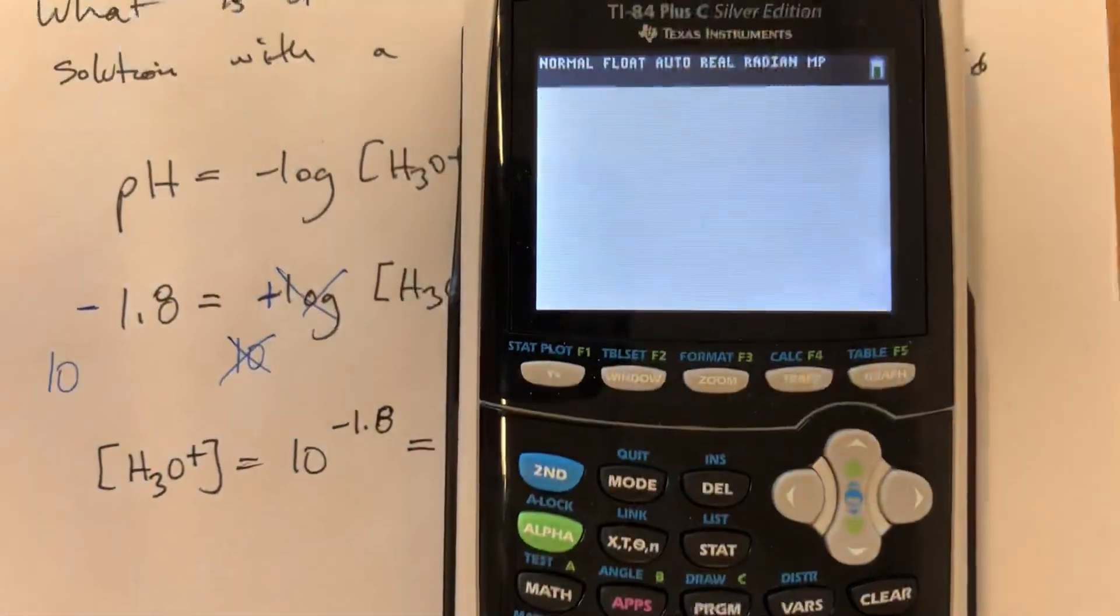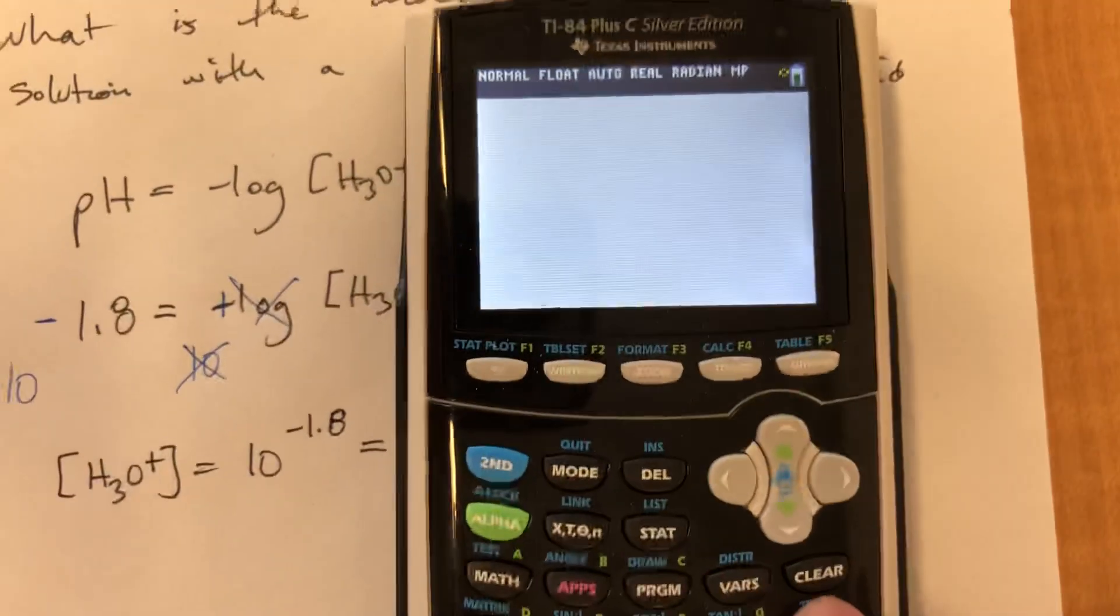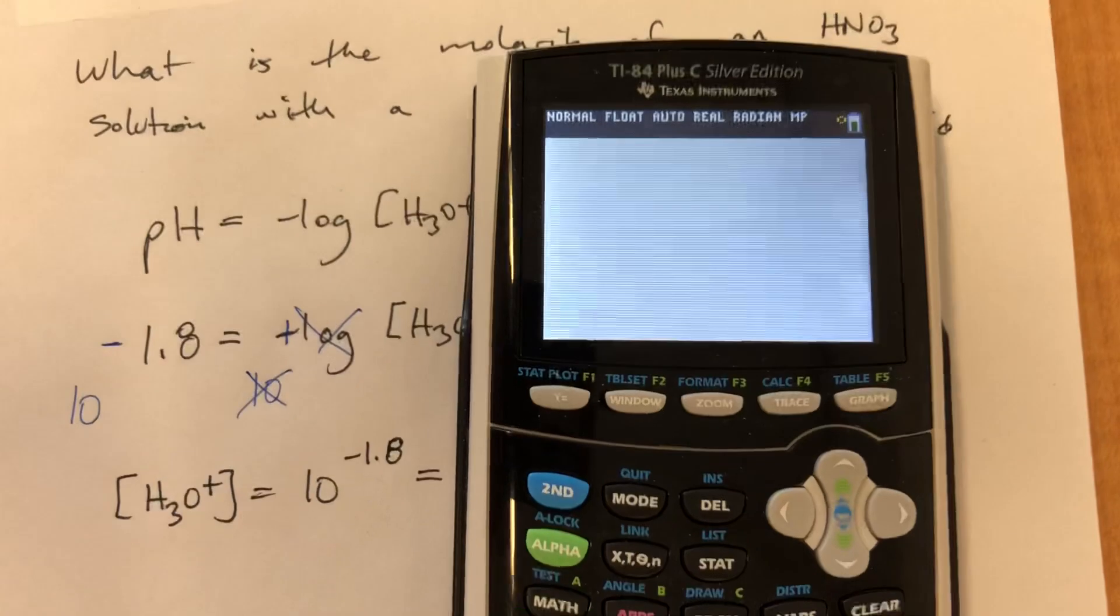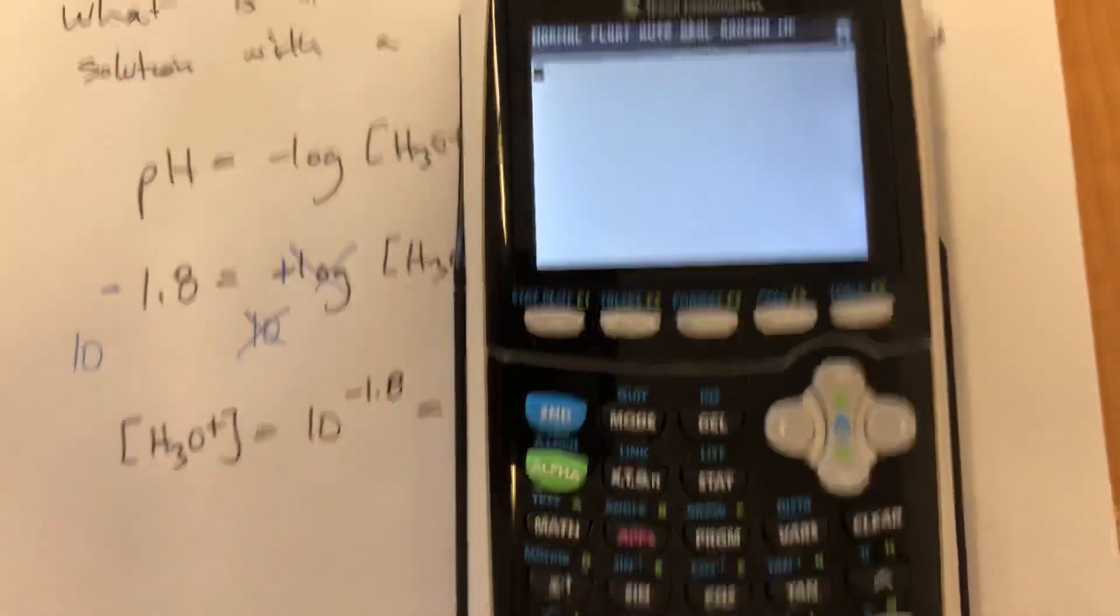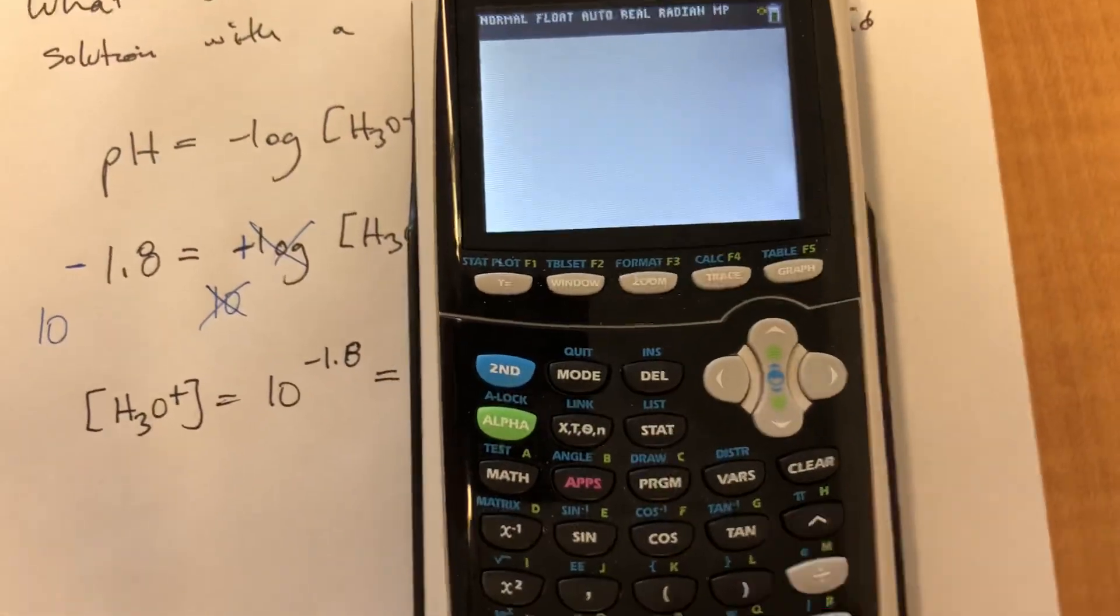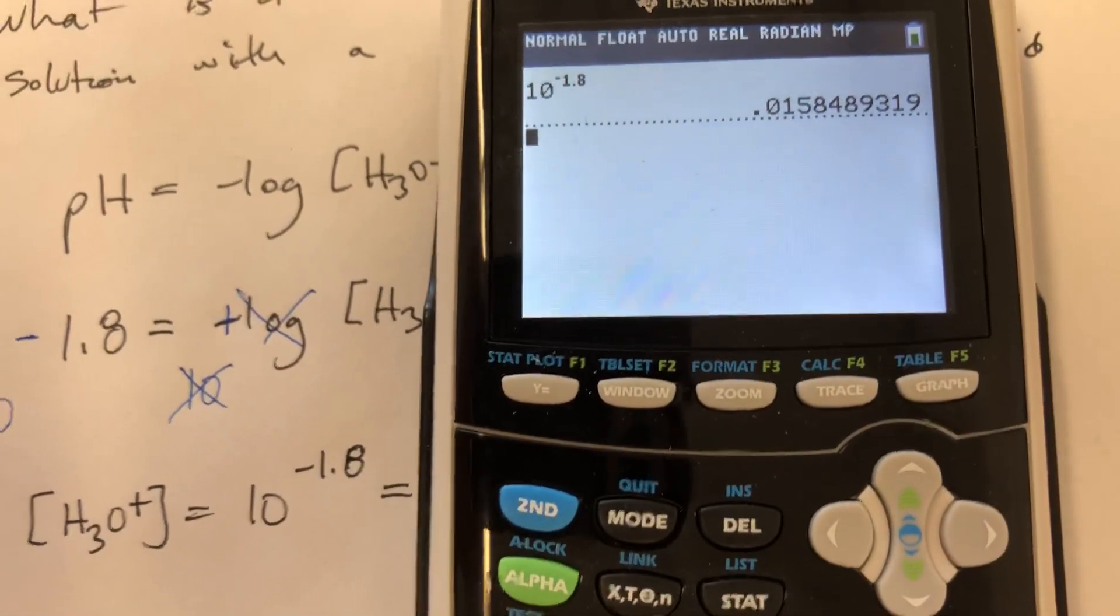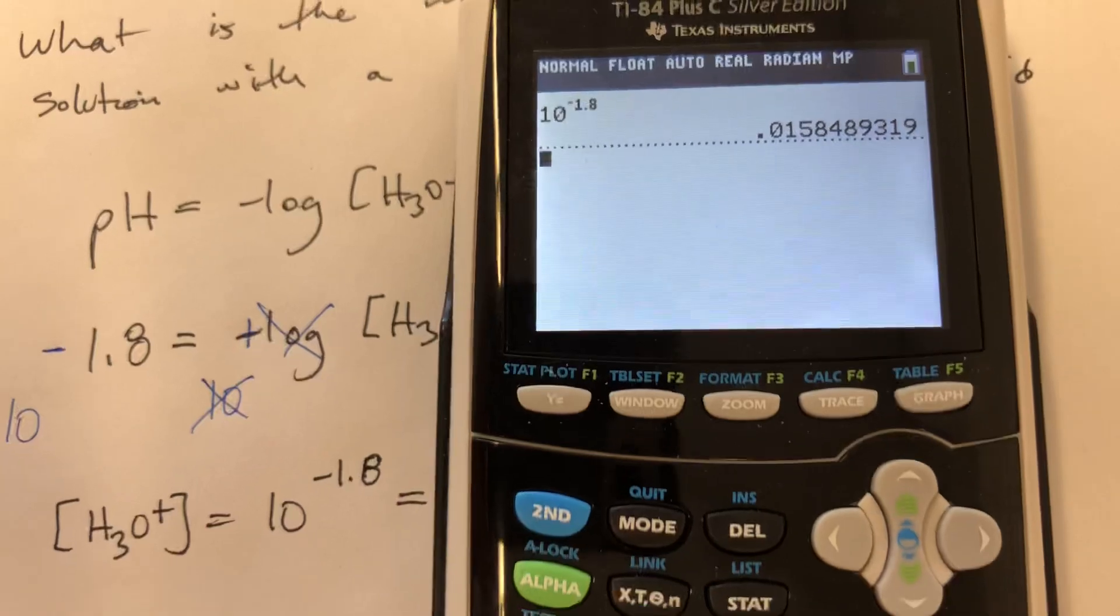Typing that in. 10 raised to the negative 1.8 equals 0.016.